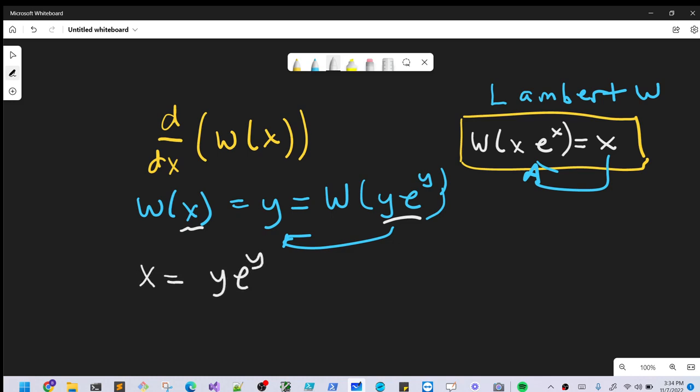Now we have something that we can differentiate pretty easily. On the left side, we take the derivative of x and just end up with 1. On the right side, we'll use the product rule, so we'll differentiate y and we get 1 times e^y plus ye^y dy/dx.